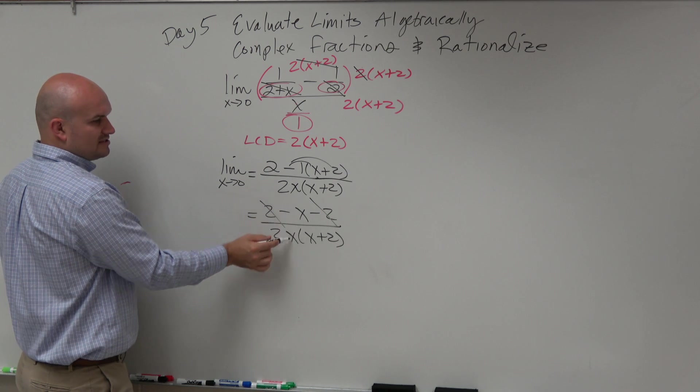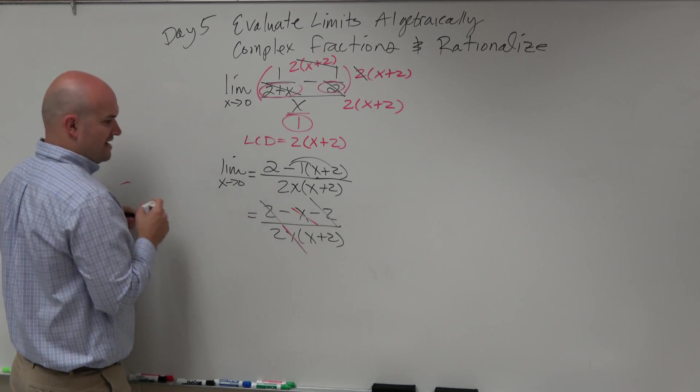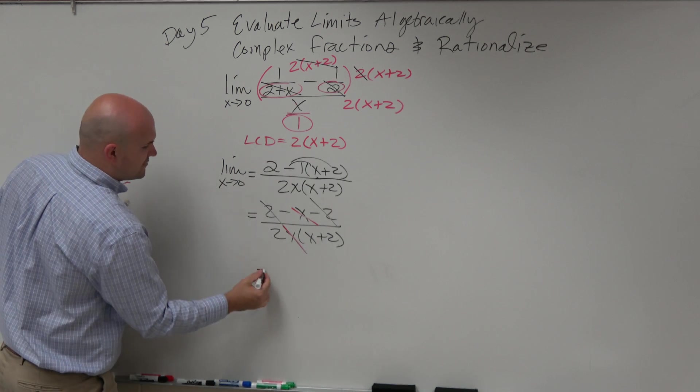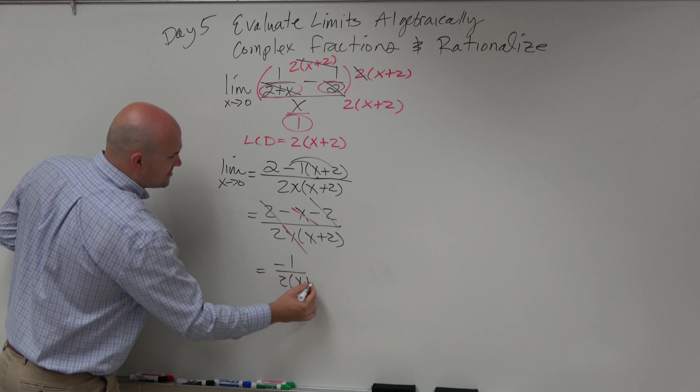And then we're left with a negative x over x. Those also divide out. And therefore, we're left with a negative 1 over 2 times x plus 2.